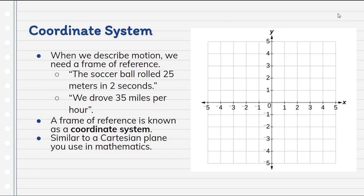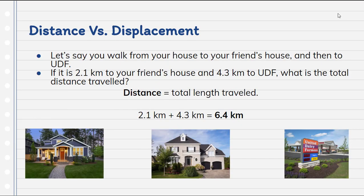When we describe motion — an object that's moving — we typically need a frame of reference, known as a coordinate system. You can think of this like the Cartesian plane that you use when graphing things in math class, calculating slope and so on. We'll be doing a lot of that here. For example: a soccer ball rolled 25 meters in two seconds, or we drove 35 miles per hour. We need quantifiable, numerical information to understand what that motion looked like.